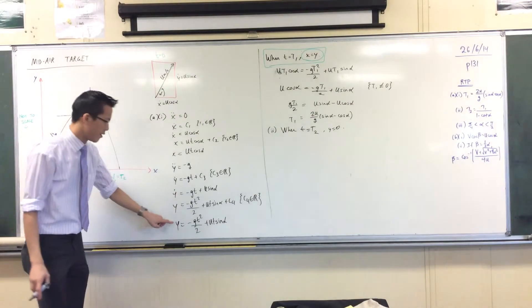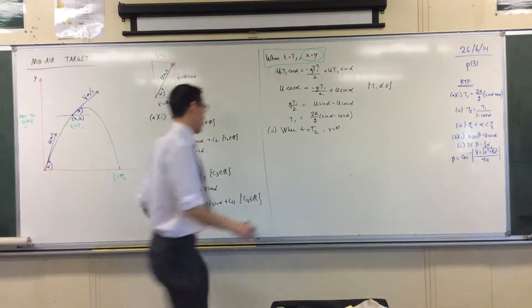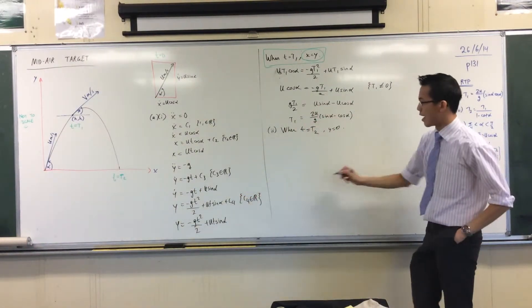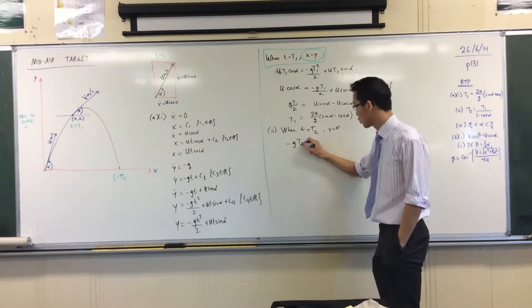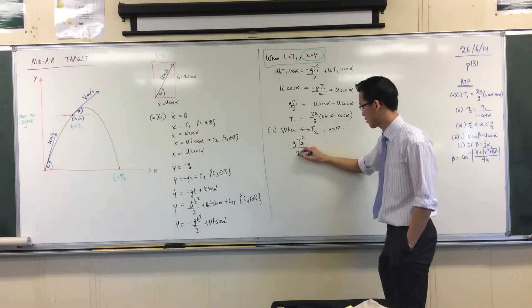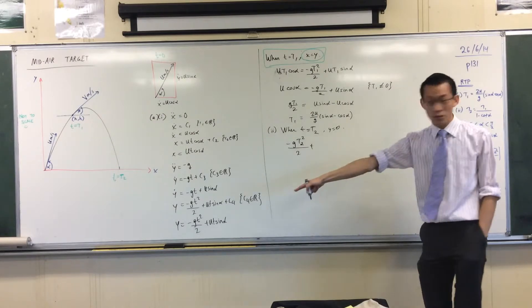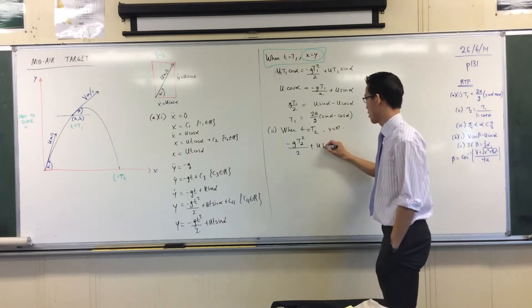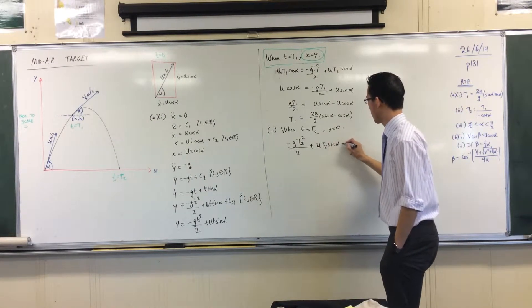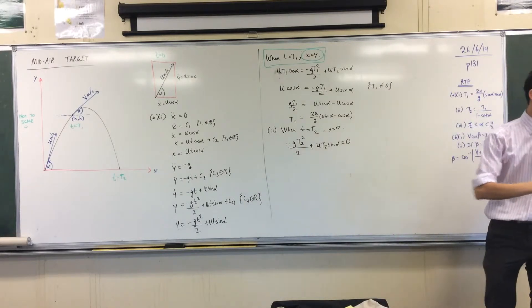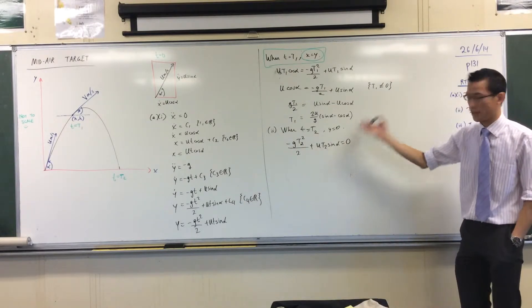It's this guy, right? So I'm going to go from there. Let's see, I'm going to have minus G T2 squared, lots of subscripts and superscripts, plus U T2 sine alpha, there you go. That's zero. There's my vertical displacement. And it's hit the ground. There it is.